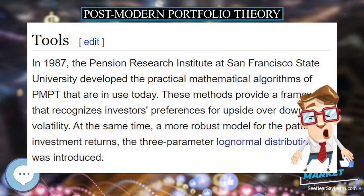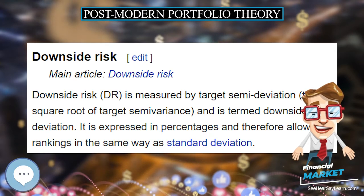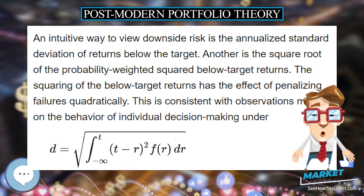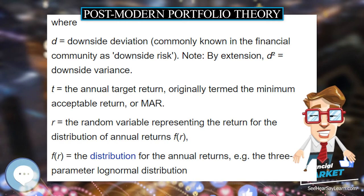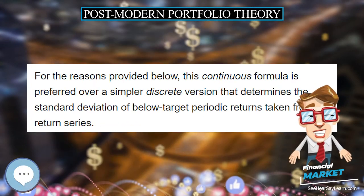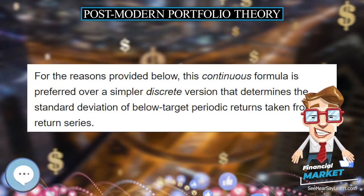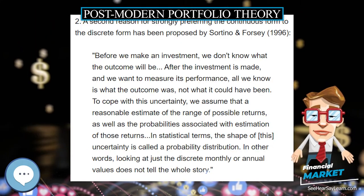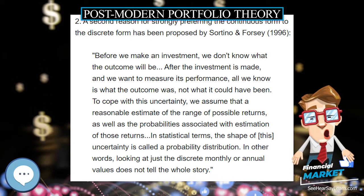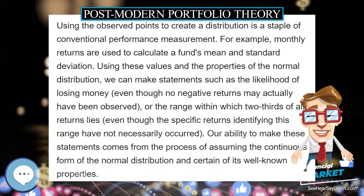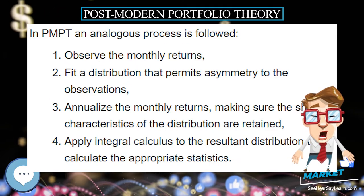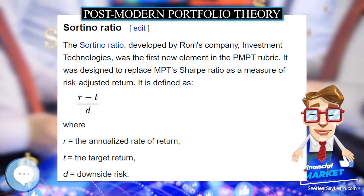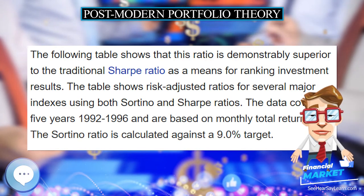Another way to view downside risk is the square root of the probability-weighted squared below-target returns. The squaring of the below-target returns has the effect of penalizing failures quadratically. This is consistent with observations made on the behavior of individual decision-making, where D equals downside deviation, commonly known in the financial community as downside risk. By extension, D squared equals downside variance. T equals the annual target return, originally termed the minimum acceptable return, or MAR. R equals the random variable representing the return for the distribution of annual returns F(R). F(R) equals the distribution for the annual returns, e.g., the three-parameter log-normal distribution.